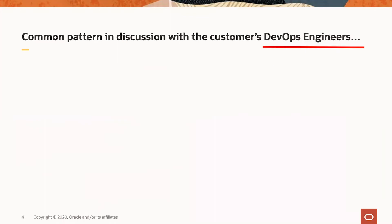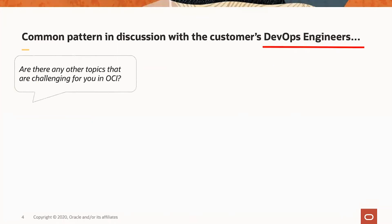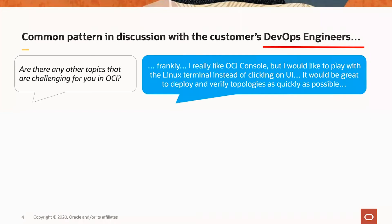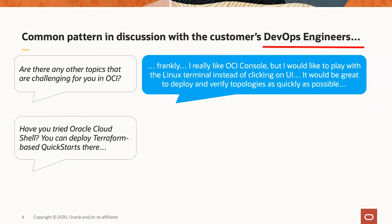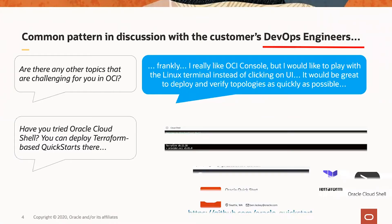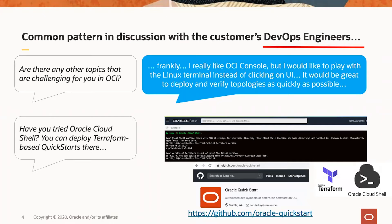Another pattern, this time with customer DevOps engineers. Again, we asked about topics which seemed challenging for them. DevOps engineers used to answer: 'Frankly, I really like OCI console, but I would like to work with the Linux terminal instead of clicking on the UI. It would be great to deploy and verify topologies as quickly as possible.' So we told them about Oracle Cloud Shell, and that it is possible to deploy Terraform-based quick starts there. Here is a link to our quick start, and customers were very excited about it.